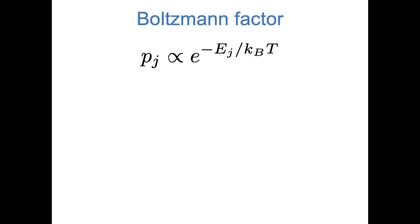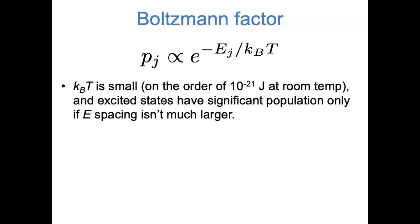I'd like to say a couple more things about this expression to help us wrap our minds around Boltzmann factors. Numerically, kBT is really small. We saw that kB is on the order of 10 to the minus 23 joules per kelvin, and most of the time we're thinking about temperatures in the hundreds of kelvin. So around room temperature, kBT is on the order of 10 to the minus 21 joules. The upshot is that if the energy levels of an atom or molecule are spaced much farther apart than 10 to the minus 21 joules, then really only the ground state will have significant occupation. It's only when energy levels are really close together, on the order of 10 to the minus 21 joules, that we see significant population of the excited states.